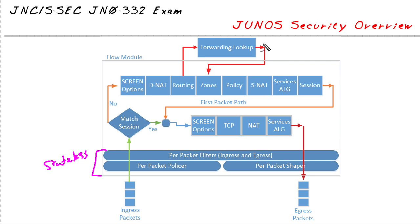If the destination is already in my forwarding table I'm good to go; if not, I'll look it up through normal routing procedure to figure out what the exit interface is going to be. That gets me to the point where I have my ingress interface — where the packet came in — and my egress interface. That allows me to determine what the zones are, and the zones are really where I get my policy.